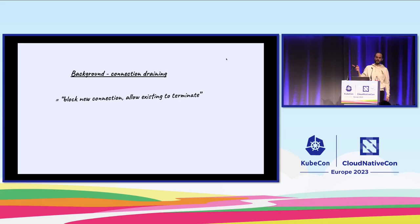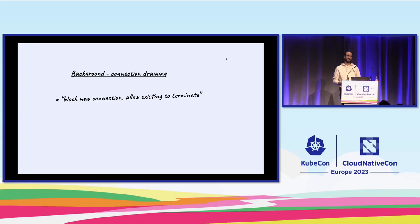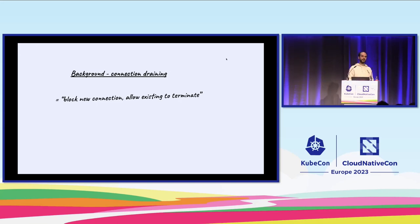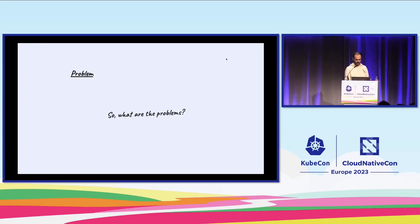I mentioned connection draining at the beginning. What does that mean? Connection draining essentially means that you block new connections but allow the existing ones to terminate — it's a graceful shutdown mechanism that the load balancer can or cannot support. Older load balancers don't necessarily support it. Connection draining is important in this talk because it lays the foundation for the features we've built upon and the improvements we've made during this past year.